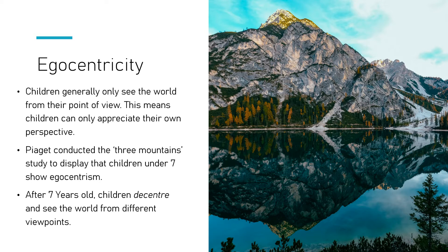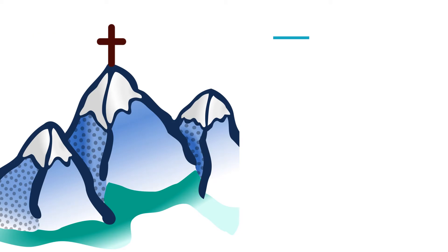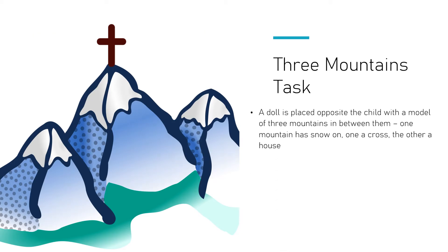A study you need to know about is the Three Mountains experiment. It was a task to test egocentrism — to see whether children can see things from other people's point of view. As the title suggests, there were three mountains: one had snow on the top, another had a cross on it, and the other had a house on top. From different viewpoints you would be able to see the tops of some mountains and not others.